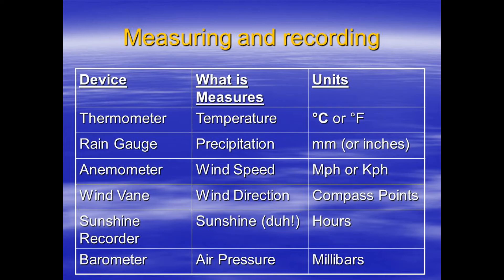For wind speed, the unit of measurement would be kilometers per hour or miles per hour, or as you might hear on the weather in the evenings: knots. For wind direction, the units of measurement would be the compass points, or compass directions — North, South, East, West, Northwest, Southwest.